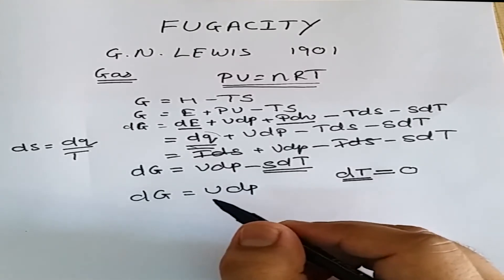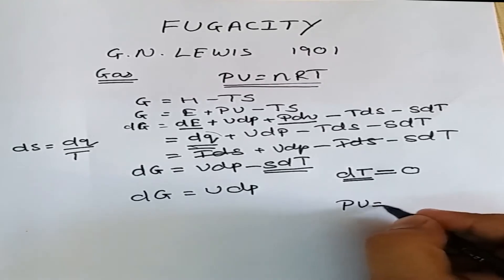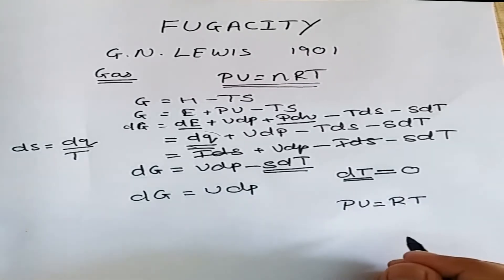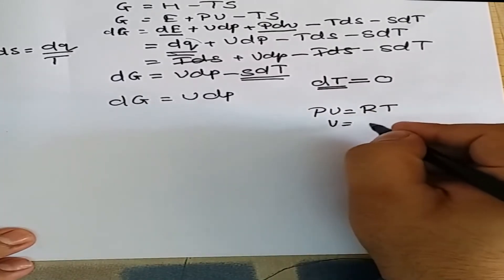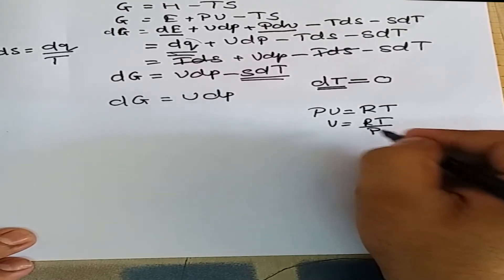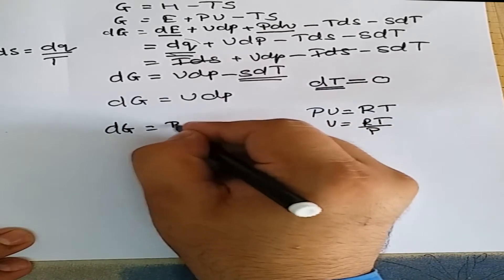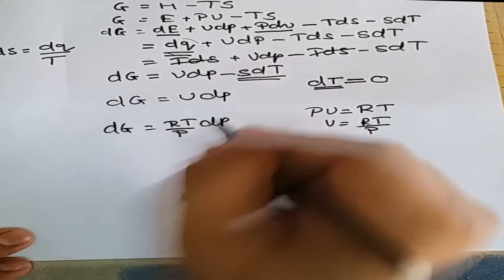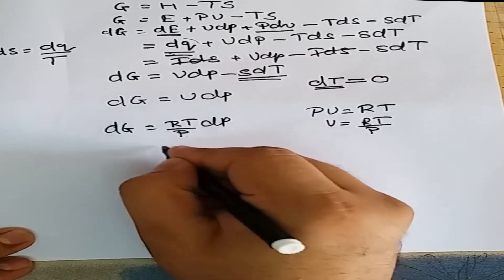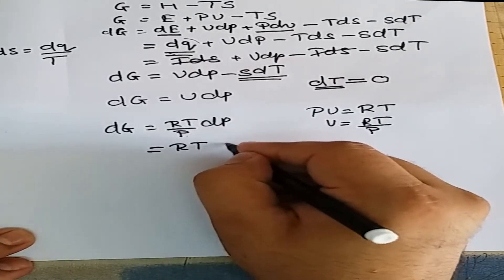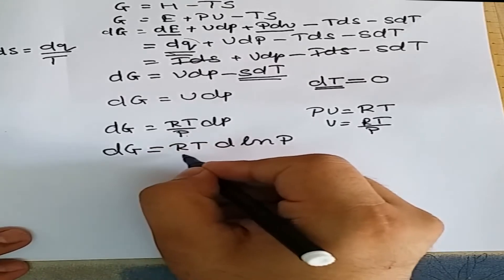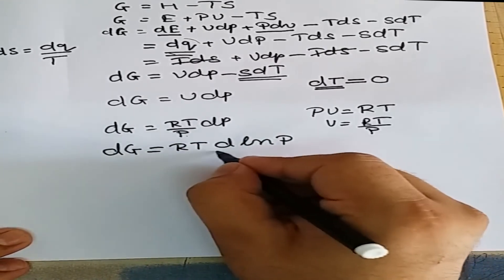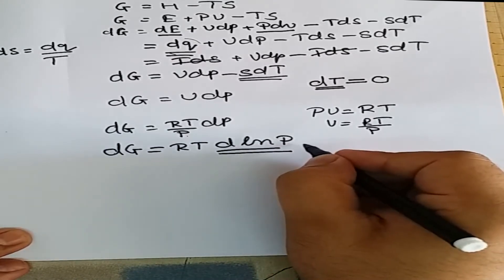For one mole of an ideal system, PV = RT, so V = RT/P. We can write dG = (RT/P) dP, and dP/P can be written as d(ln P). Therefore, the change in free energy dG = RT d(ln P). This relation holds good when our system is ideal.